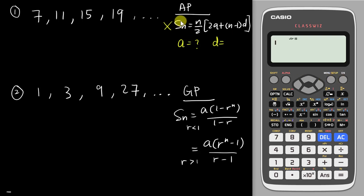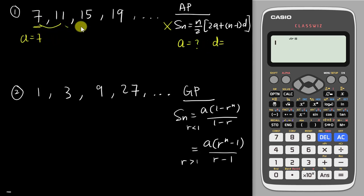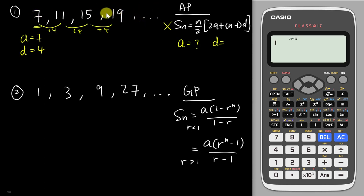In this example, the first term 'a' is 7 because the sequence starts at 7. The common difference 'd' is 4, since each number increases by 4. If you know your 'a' and 'd' values already and you want to sum all four terms — that's S4 — you can do it manually: 7 plus 11 plus 15 plus 19 equals 52.